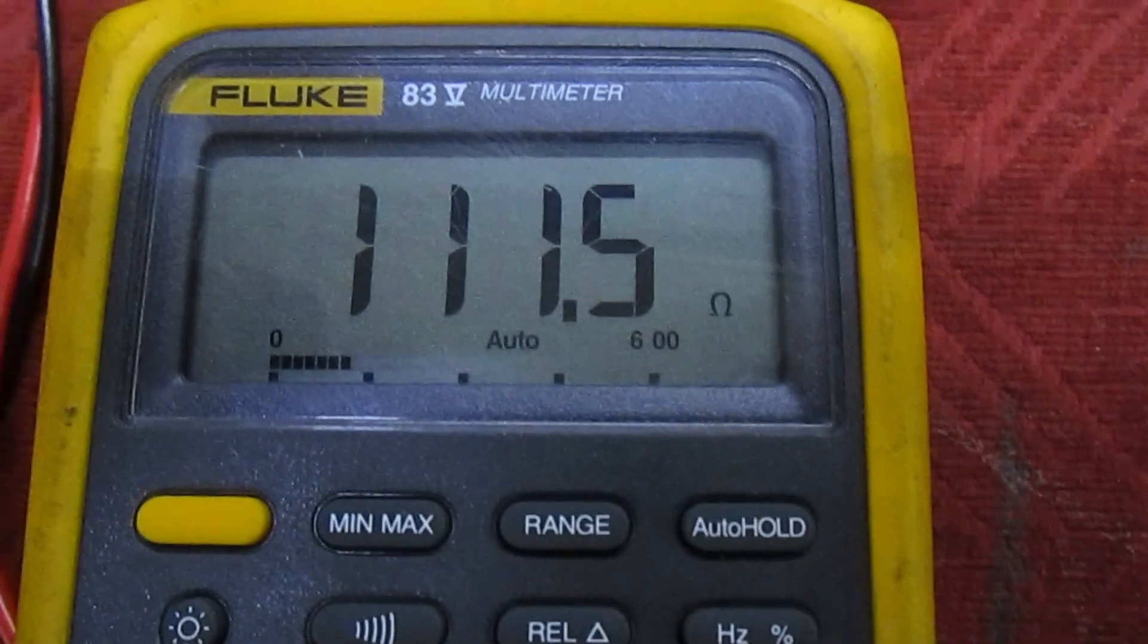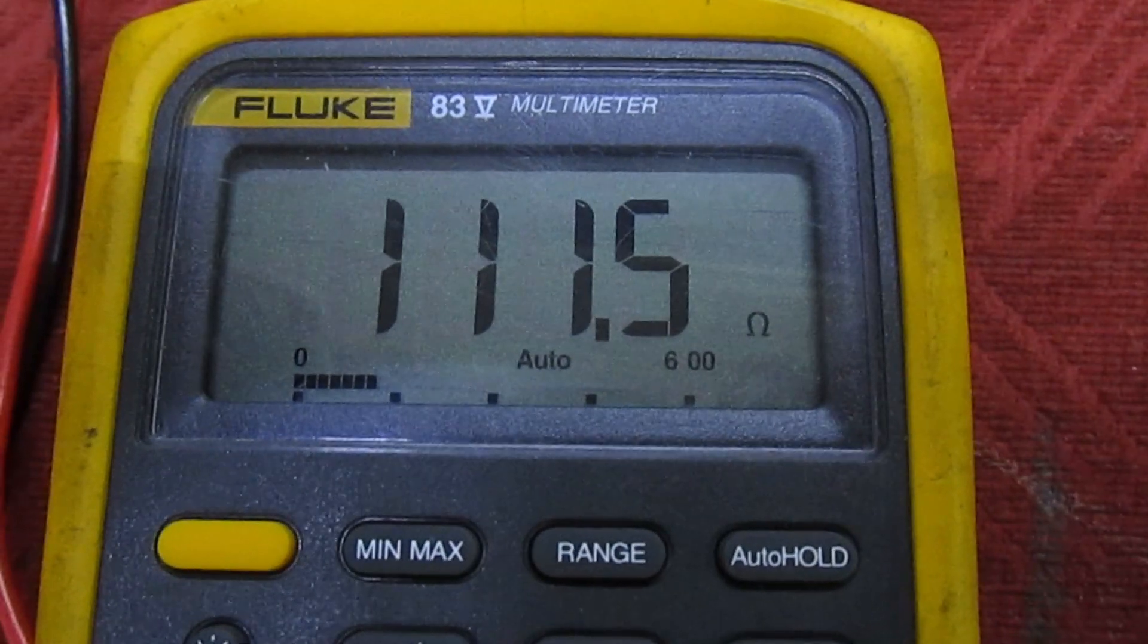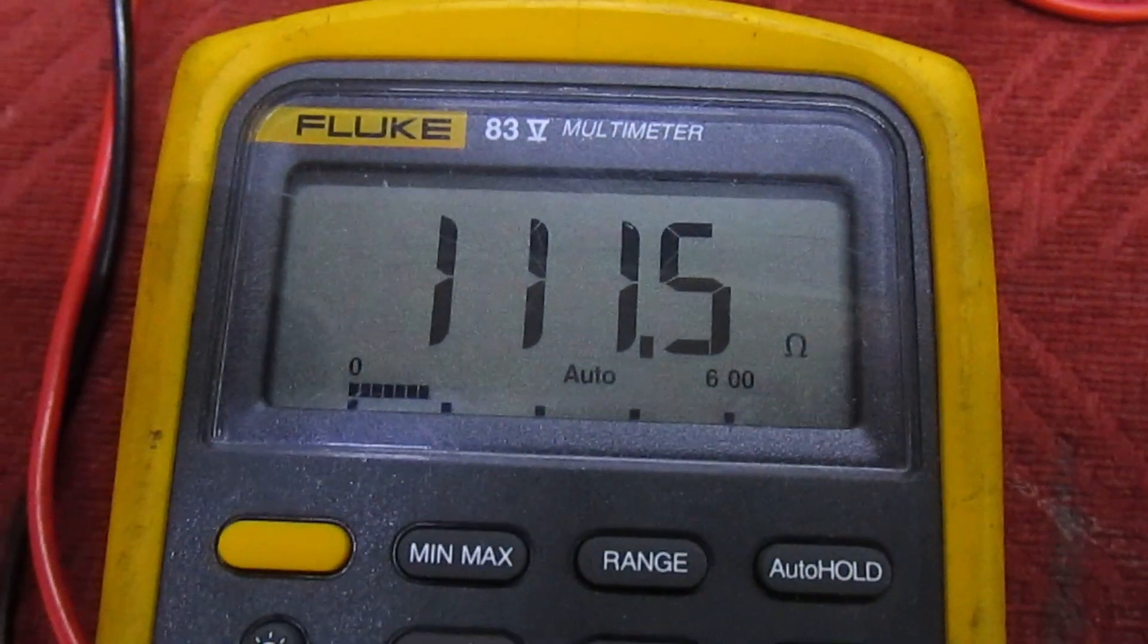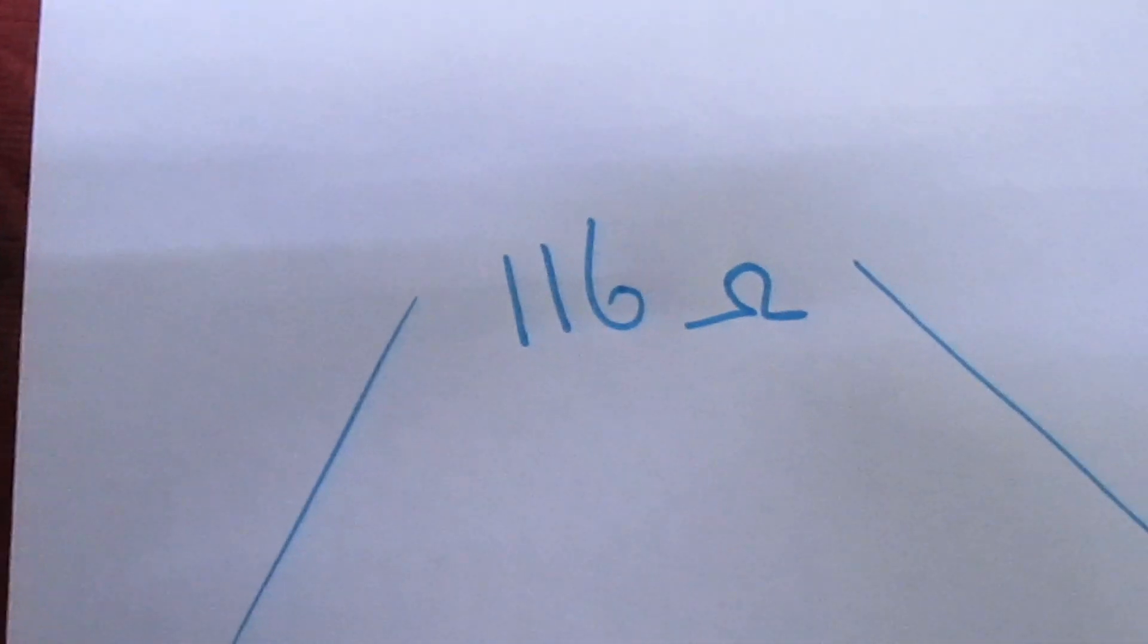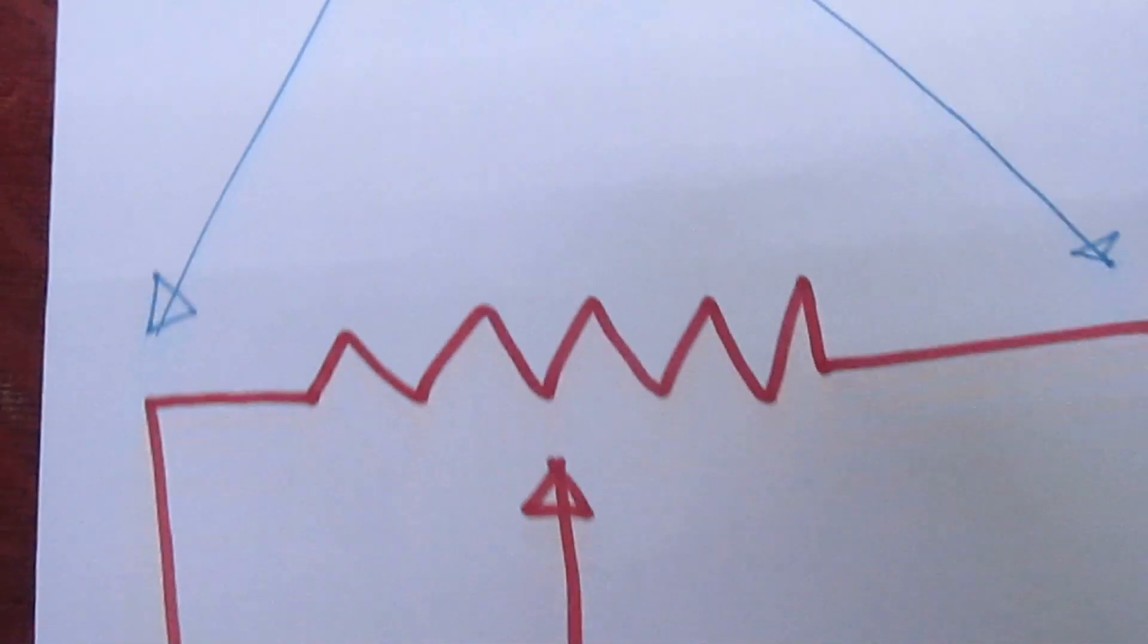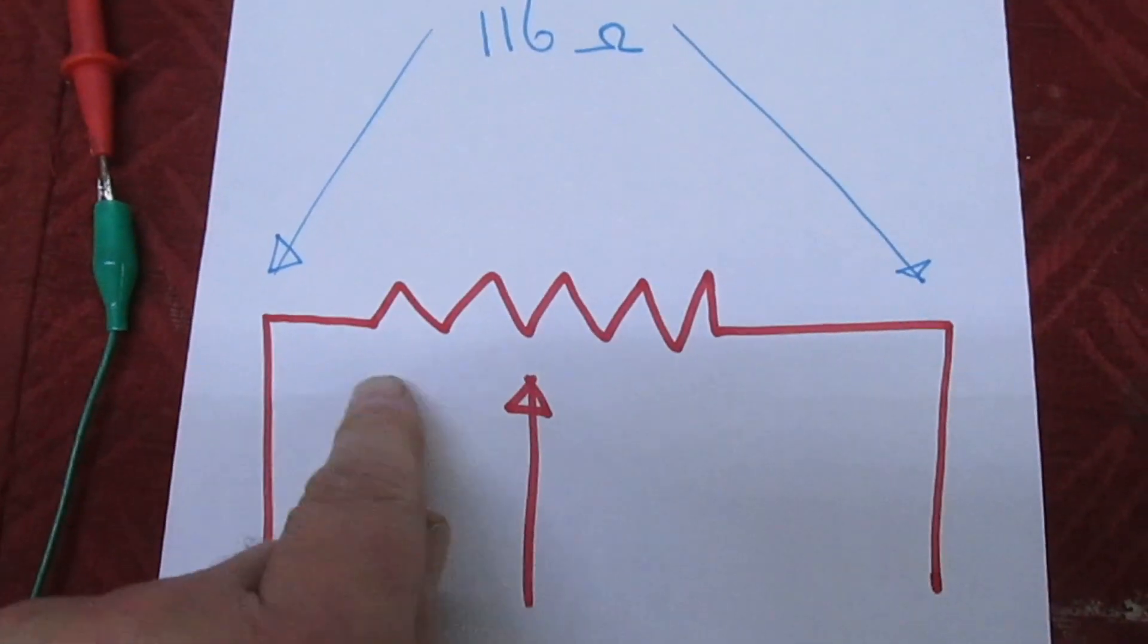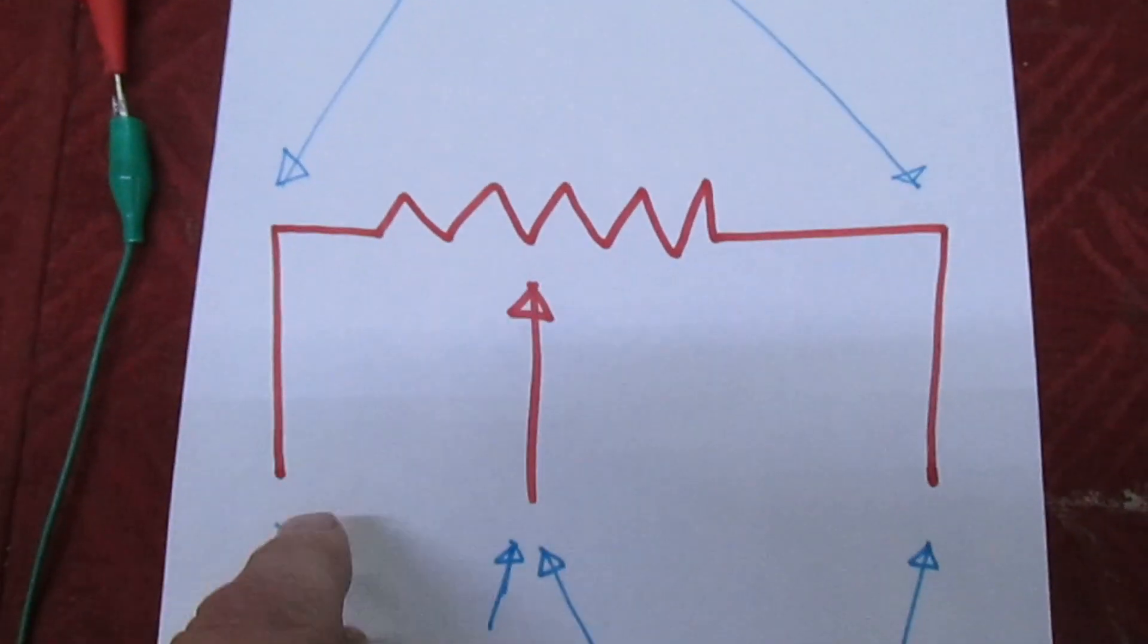We've actually got a reading of 111.5 ohms, which is slightly out of spec, and that reading keeps changing on its own. The first time I measured it was 116 ohms from end to end. Now if we take a measurement from here to here...